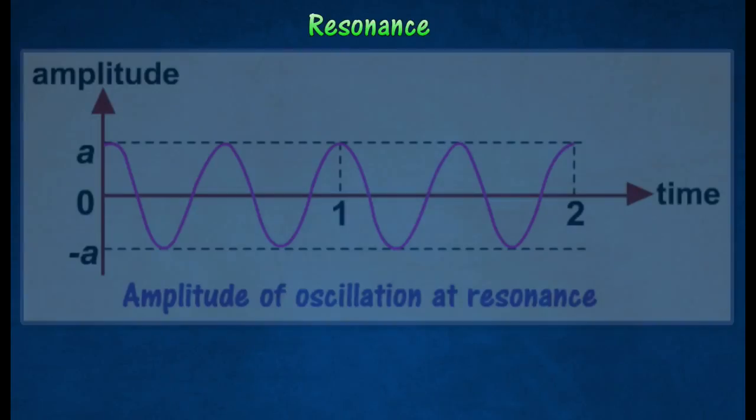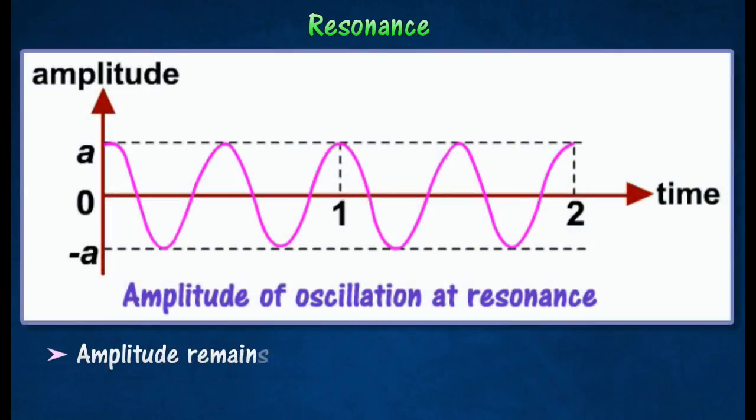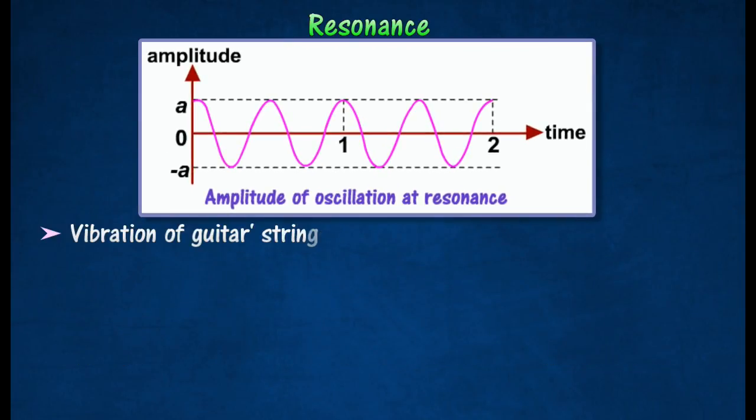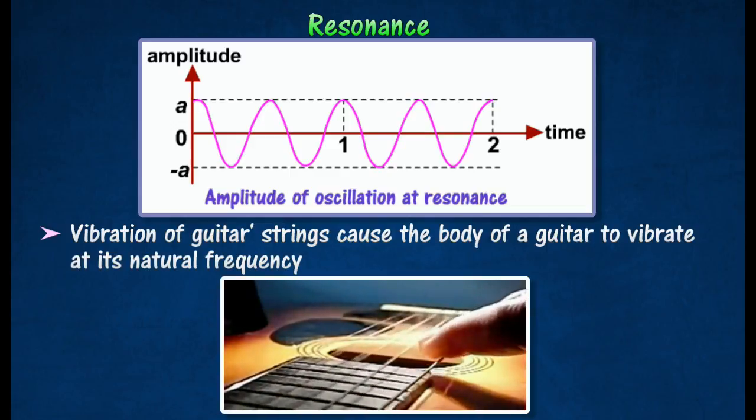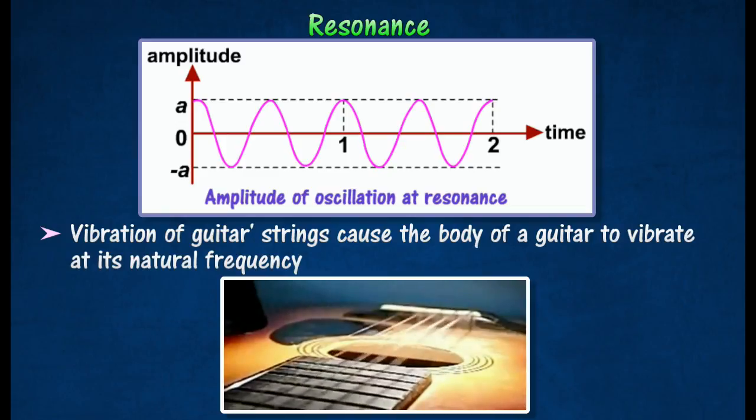Resonance. External force must be applied to keep an oscillating system going continuously. Thus, the damped oscillating system is said to be undergoing forced oscillation. An example of forced oscillation is the vibrating body of a guitar caused by the vibrations of strings of the instrument.